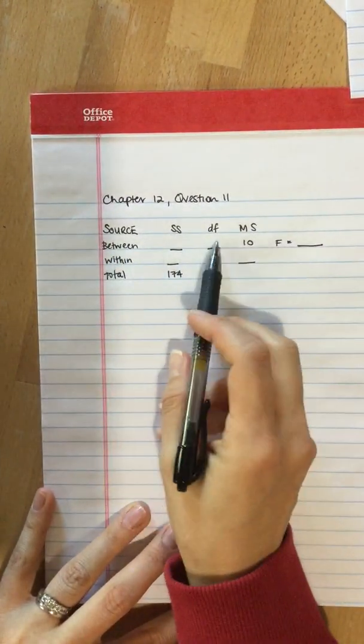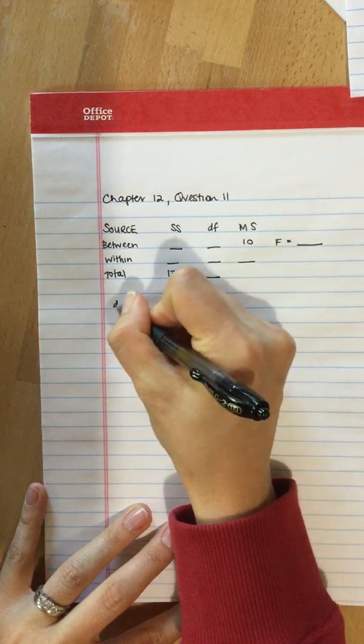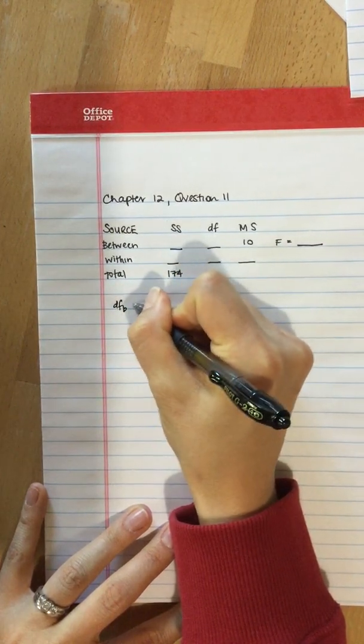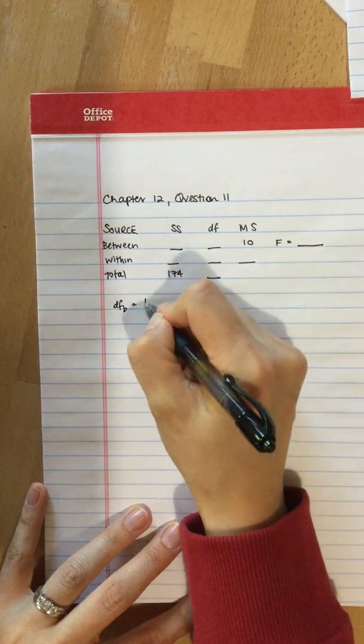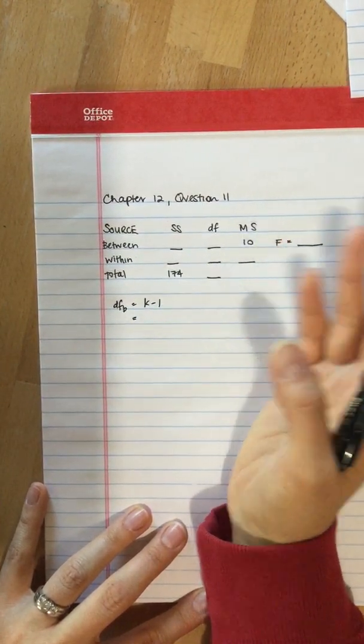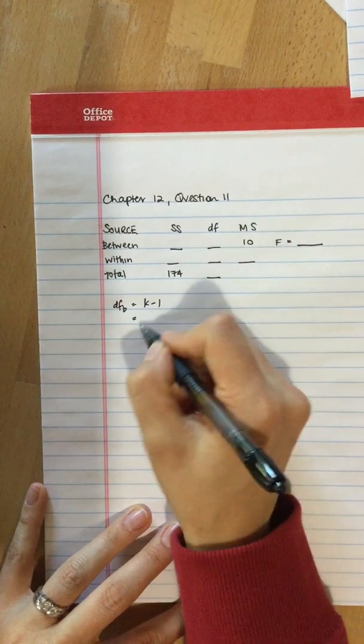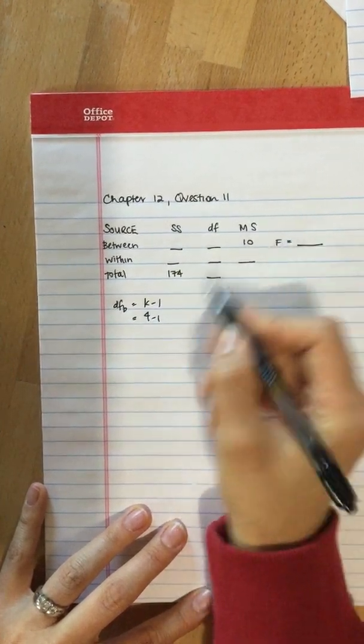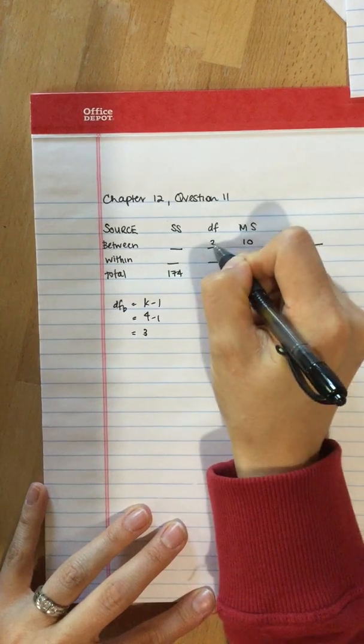So we can fill in degrees of freedom between. Degrees of freedom between is k minus 1, where k is the number of groups, and the question itself told us we have four groups. So degrees of freedom between is three.